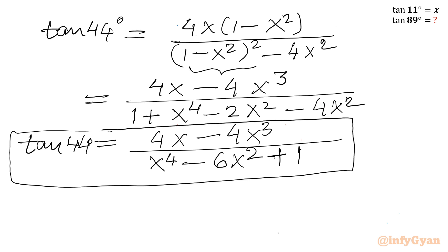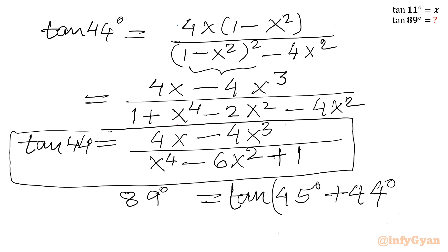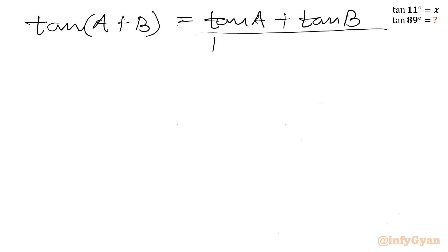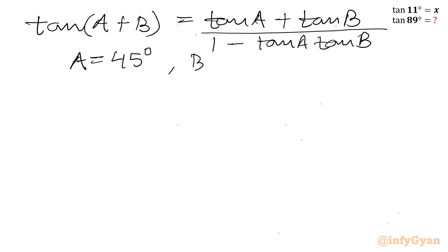Now we have to calculate tan 89. I can write 89 equal to 45 plus 44 degrees, and taking tan of both sides, tan 89 equals tan(45 plus 44). So let me write the tan(a plus b) identity: tan(a plus b) equals tan a plus tan b divided by 1 minus tan a times tan b. Here a equals 45 and b equals 44.